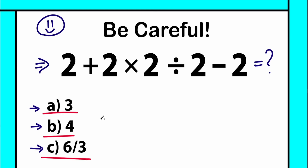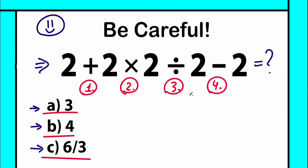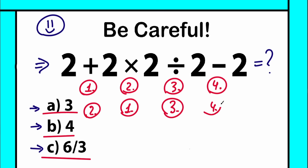What makes all the difference in the world is the order we do these operations. Do we do addition first, then multiplication, then division, then subtraction? Or do we start with multiplication first, then addition, then division? There are a lot of combinations, and depending on the order of operations, we will get different answers.